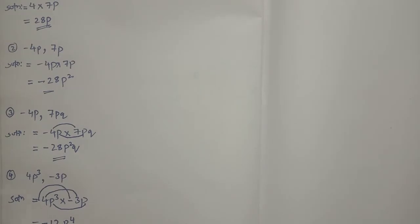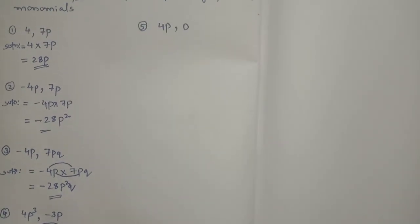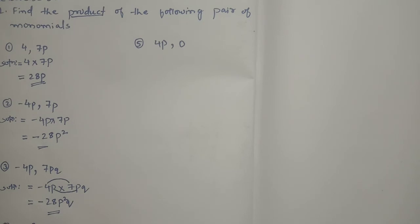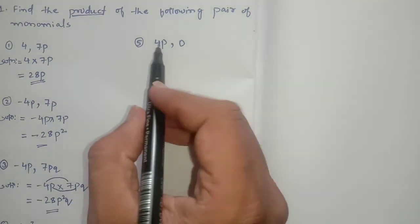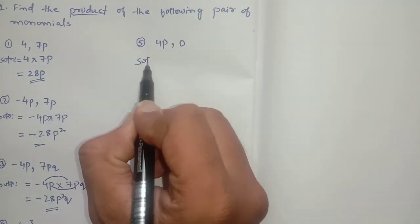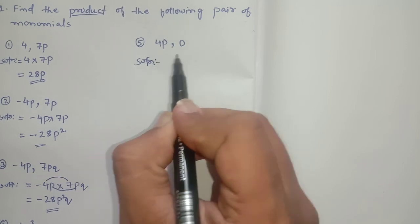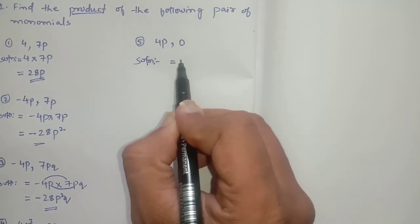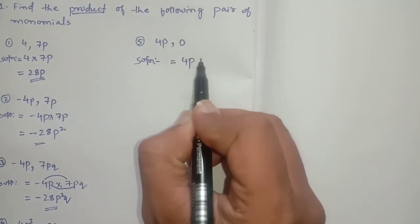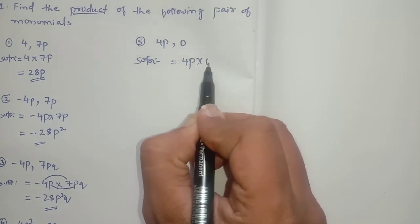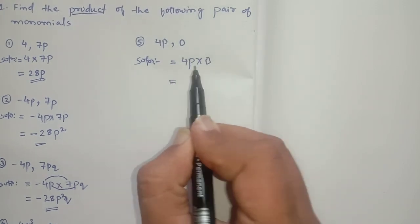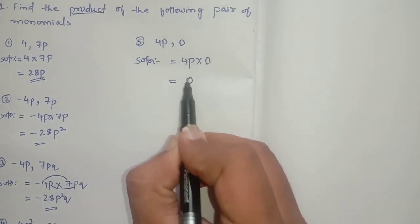Now the last question, that is question number 5. Solution: this is 4p, one monomial. Another monomial is 0. 4p into 0 is 0.